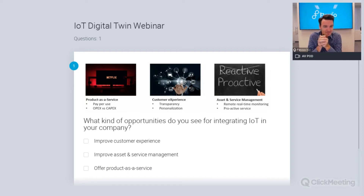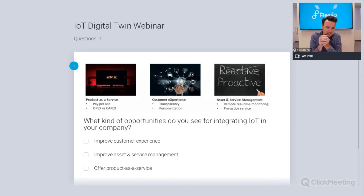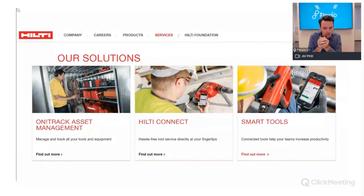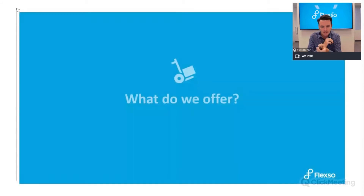The poll results are moving in real time. Asset and service management is currently leading, with improved customer experience, innovation, transparency, and changing business models — offering the product as a service — just behind. For customer service companies, proactive service and asset management is clearly a very important topic. Thanks for the feedback!